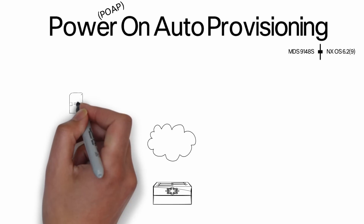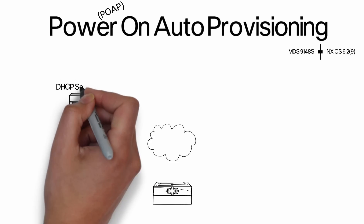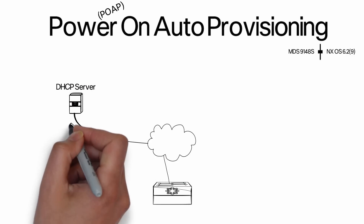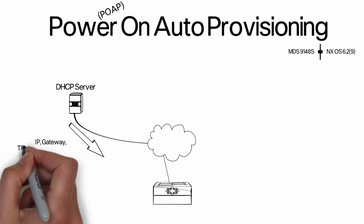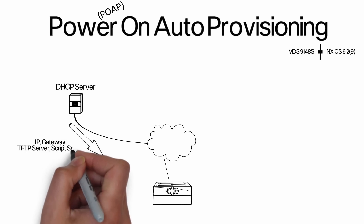Cisco's recent MDS9148S 1RU 16G line-rate fabric switch has the POAP functionality bundled with the 6.2.9 release. The workflow of POAP is very simple and requires a one-time effort. Once a fabric switch is powered up with a blank configuration, it looks for a DHCP server on the management network.